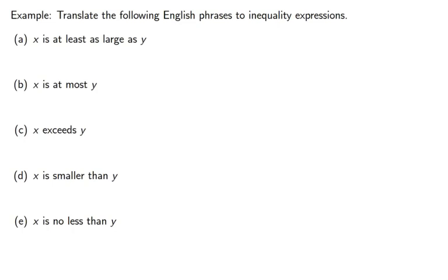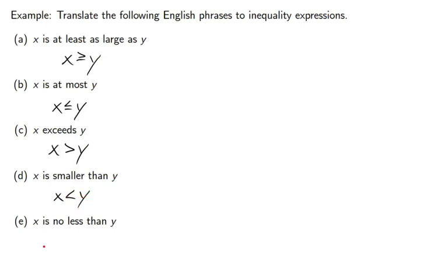Finally, a quick look at translating English phrases to inequalities. 'X is at least as large as y' means x ≥ y — at least means greater than or equal to. 'X is at most y' means x ≤ y — it can't be more than y. 'X exceeds y' means x > y — larger and cannot be the same. 'X is smaller than y' means x < y — less, but not equal. 'X is no less than y' means x ≥ y — it can't be smaller, but could be equal.